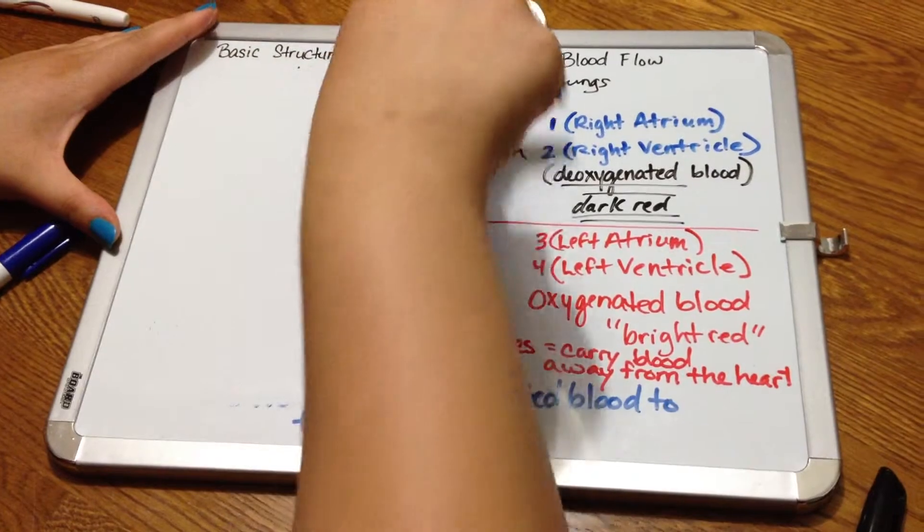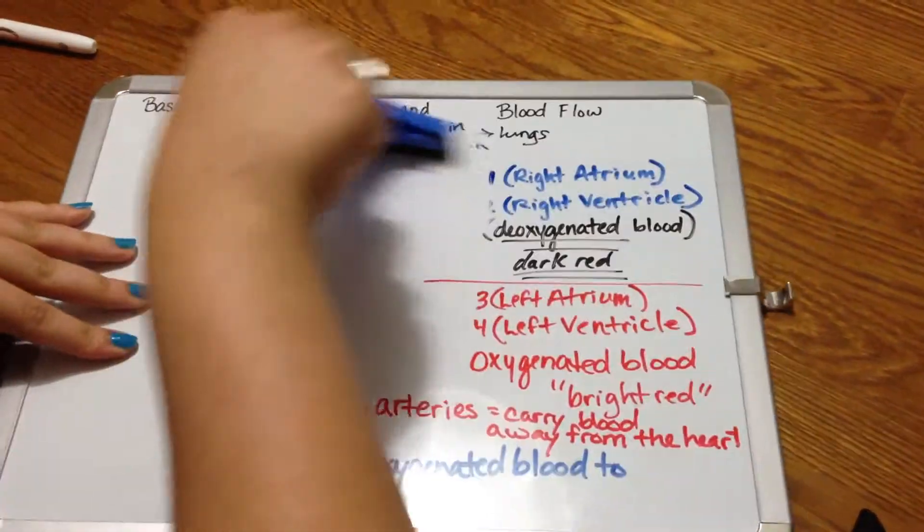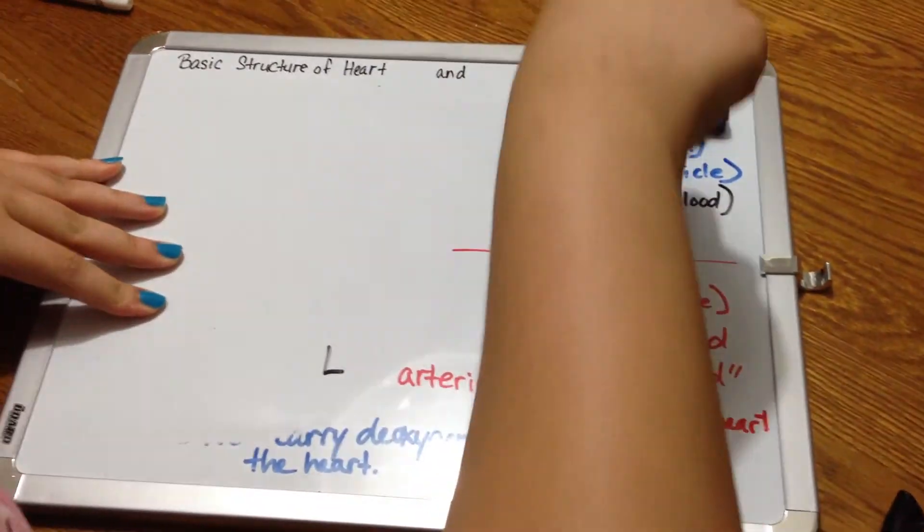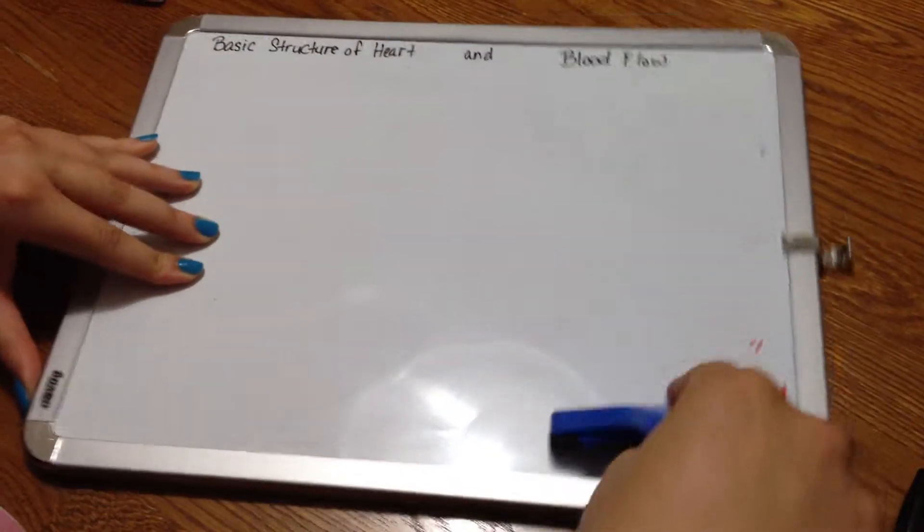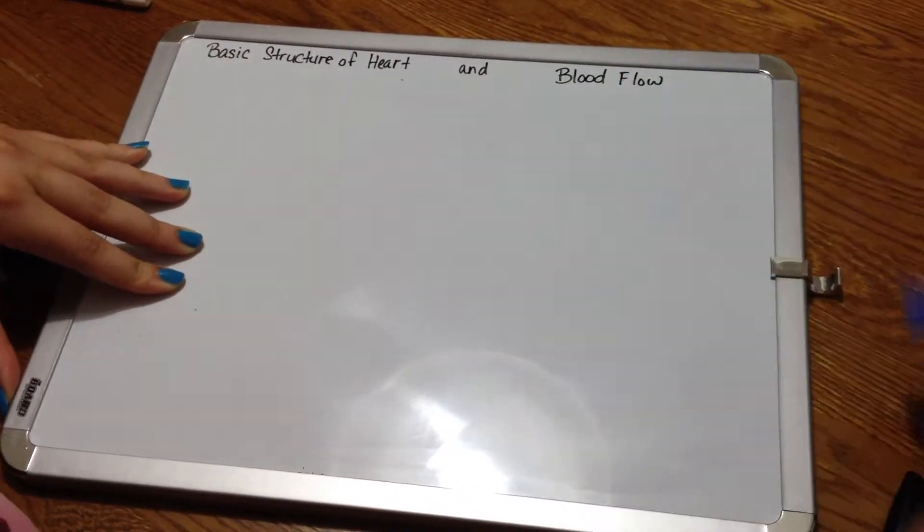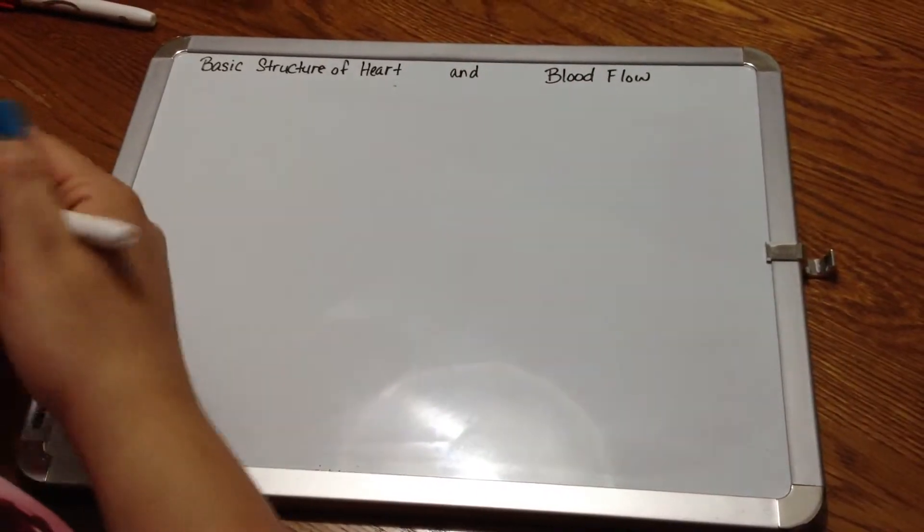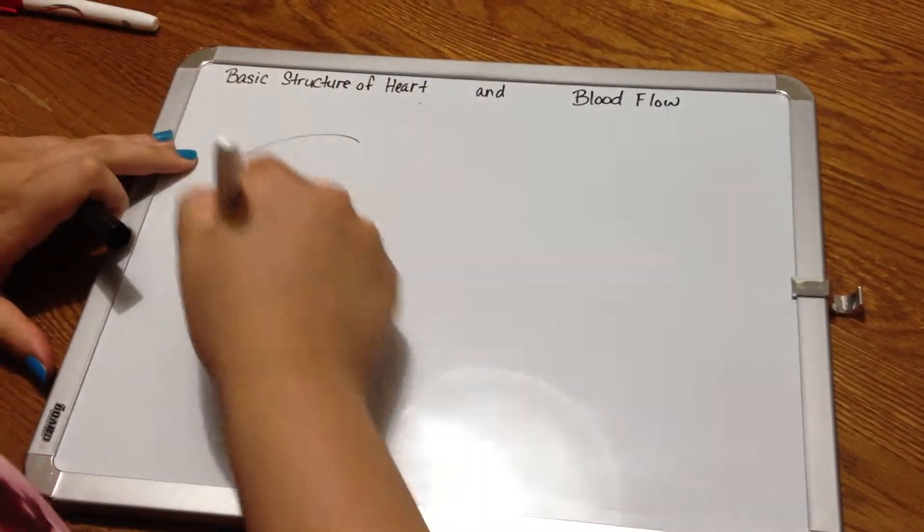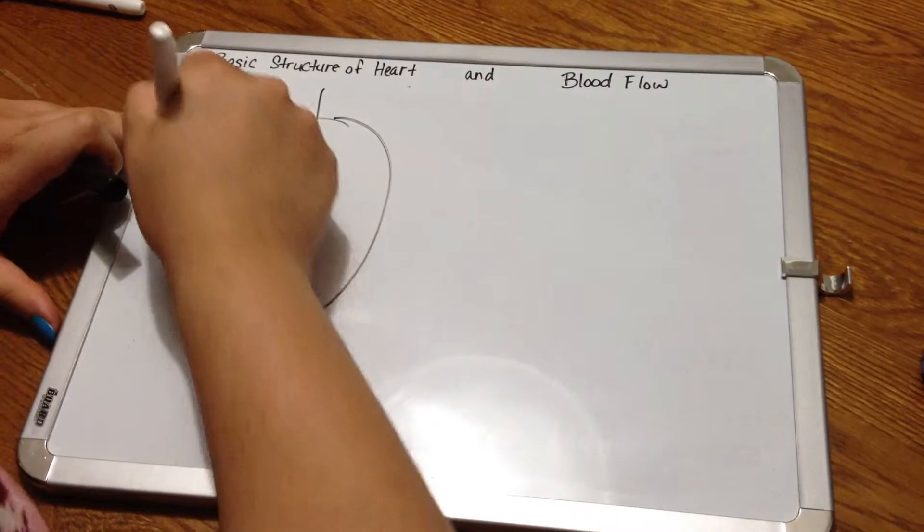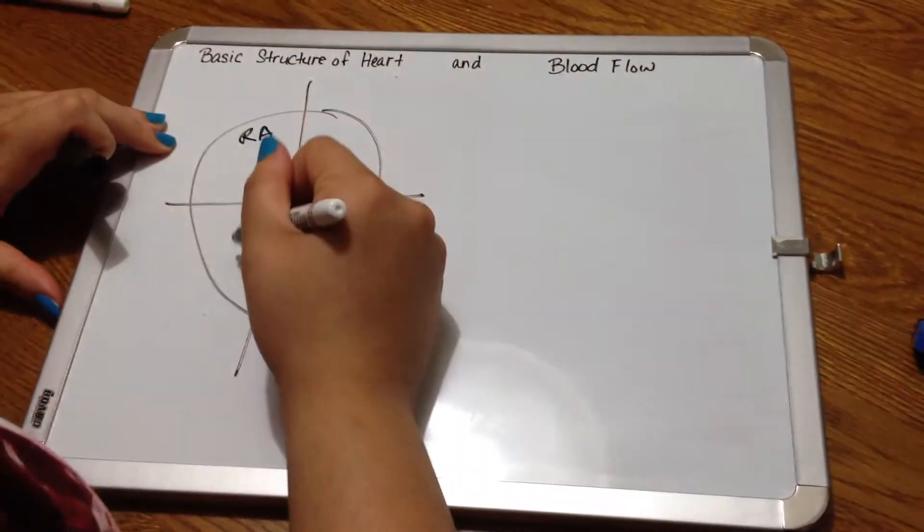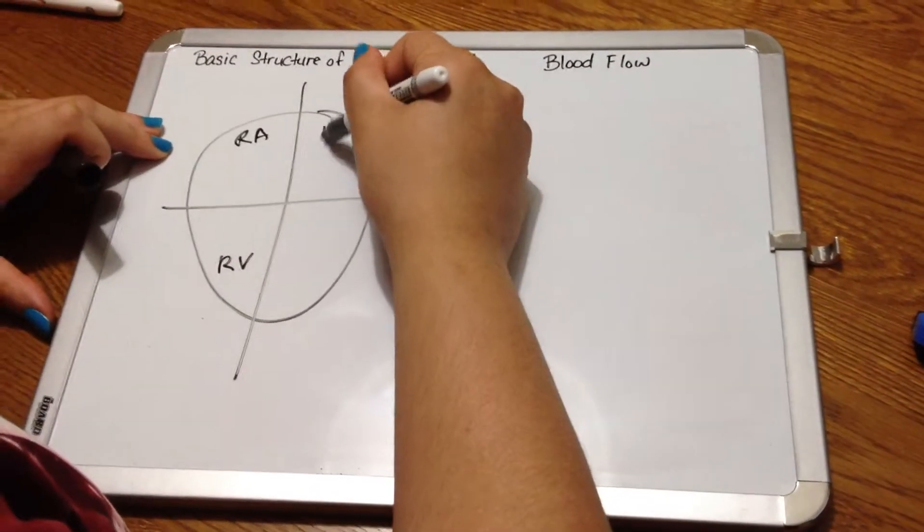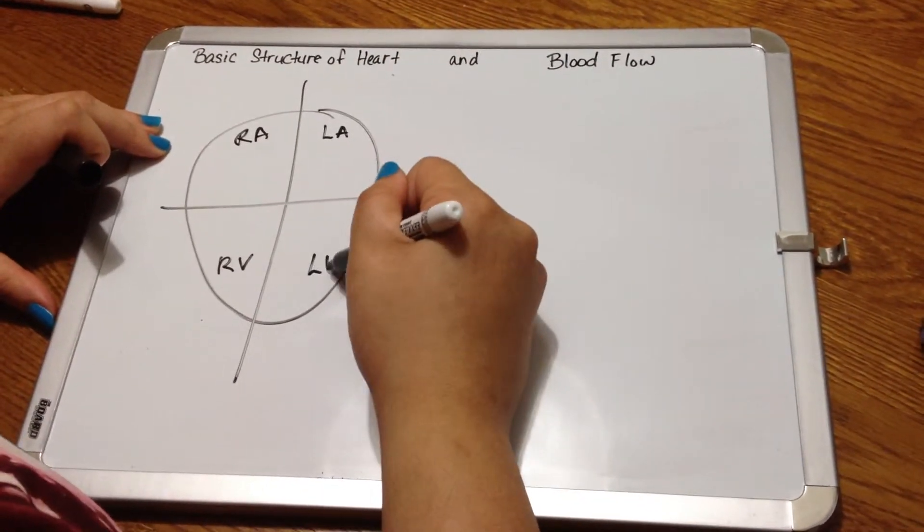We're going to go ahead now and actually see how the blood flows through the entire body by first determining how it flows through the heart. So we have our schematic again, four chambers, the right atrium, right ventricle, left atrium, left ventricle.